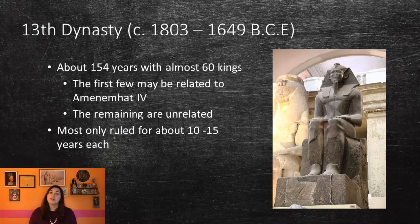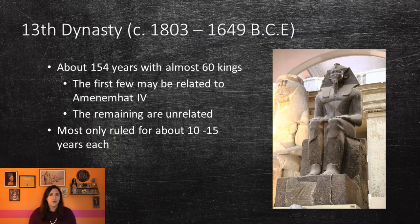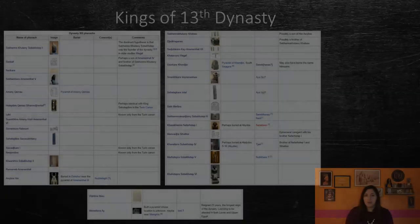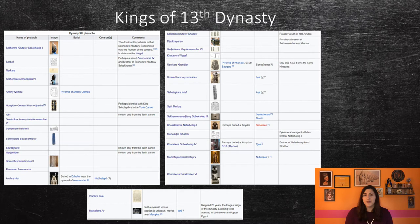The 13th dynasty was a direct continuation of the 12th dynasty, as it seems the kings continued to rule over Middle and Upper Egypt. In later texts, this dynasty was described as one of chaos and disorder, but that may not entirely be true. It may have actually been quite peaceful, as it seems the central government continued to rule out of the capital Ittawi in the Fayum. This period lasted for almost 154 years, with almost 60 different rulers. Although the first few rulers seemed to be related to the last rulers of the 12th dynasty, the majority of the other kings seemed to be completely unrelated to each other. Some may actually have been born as commoners or nobles.